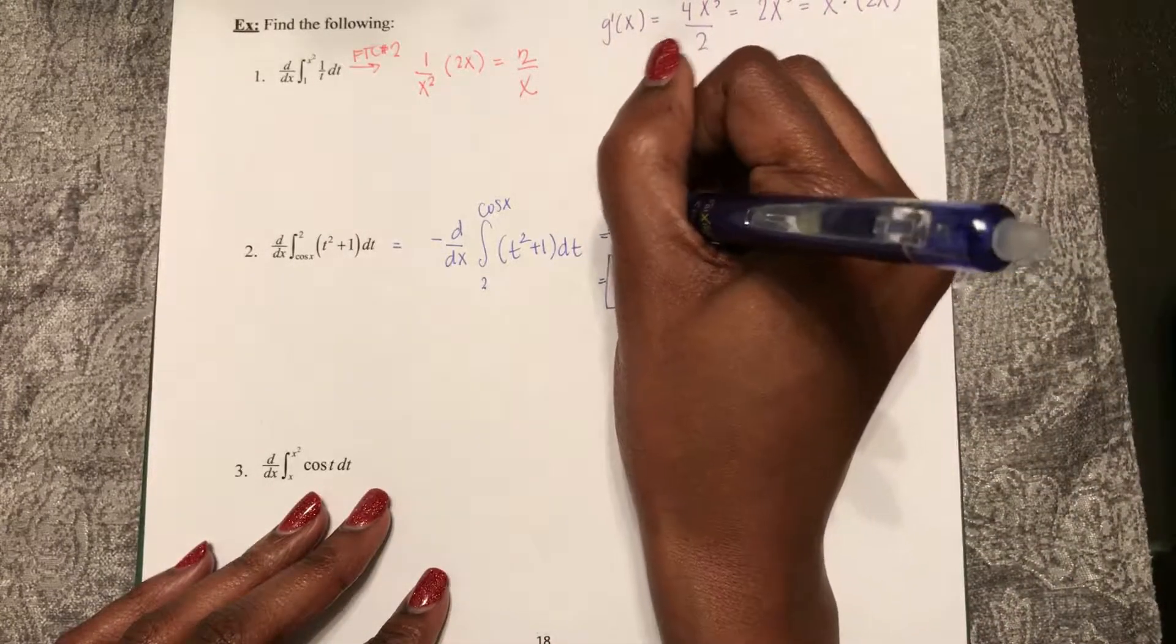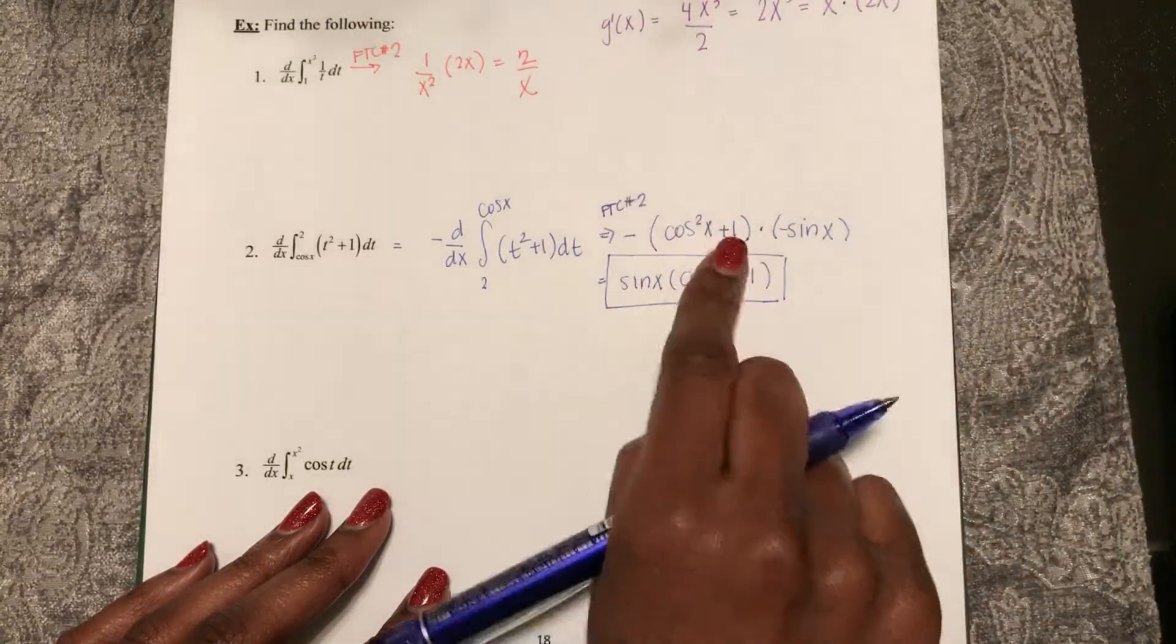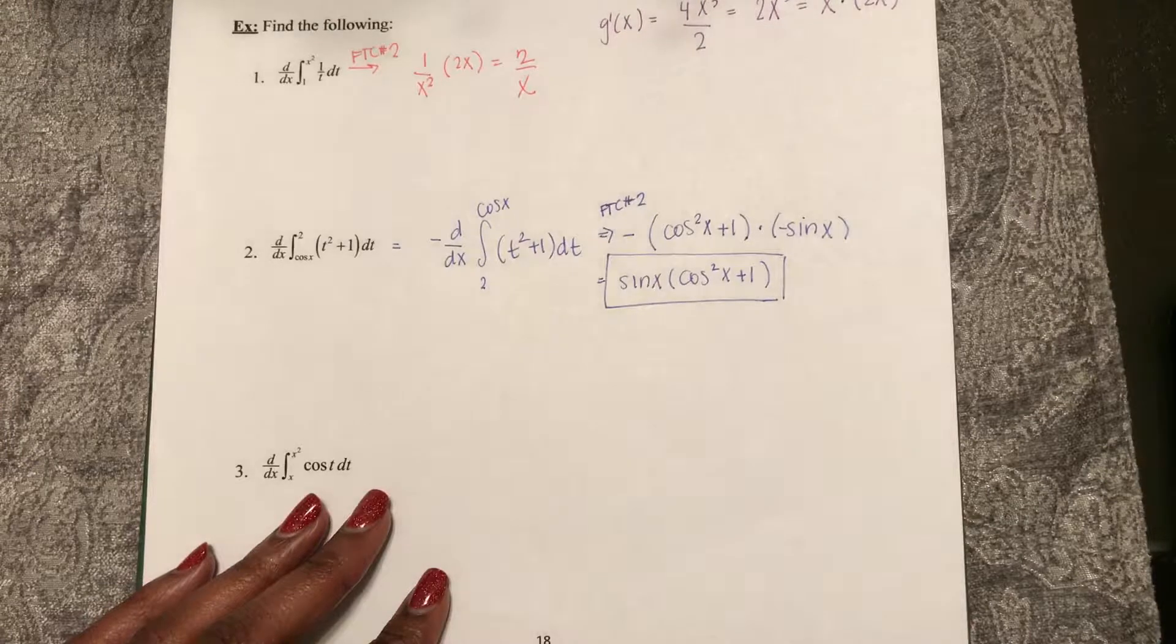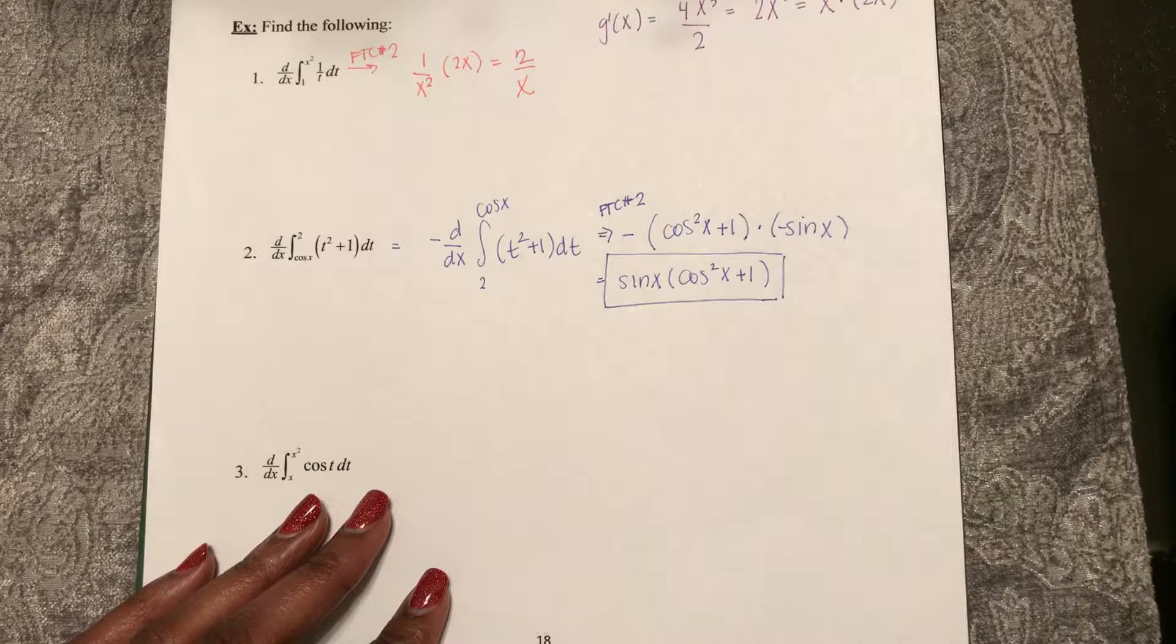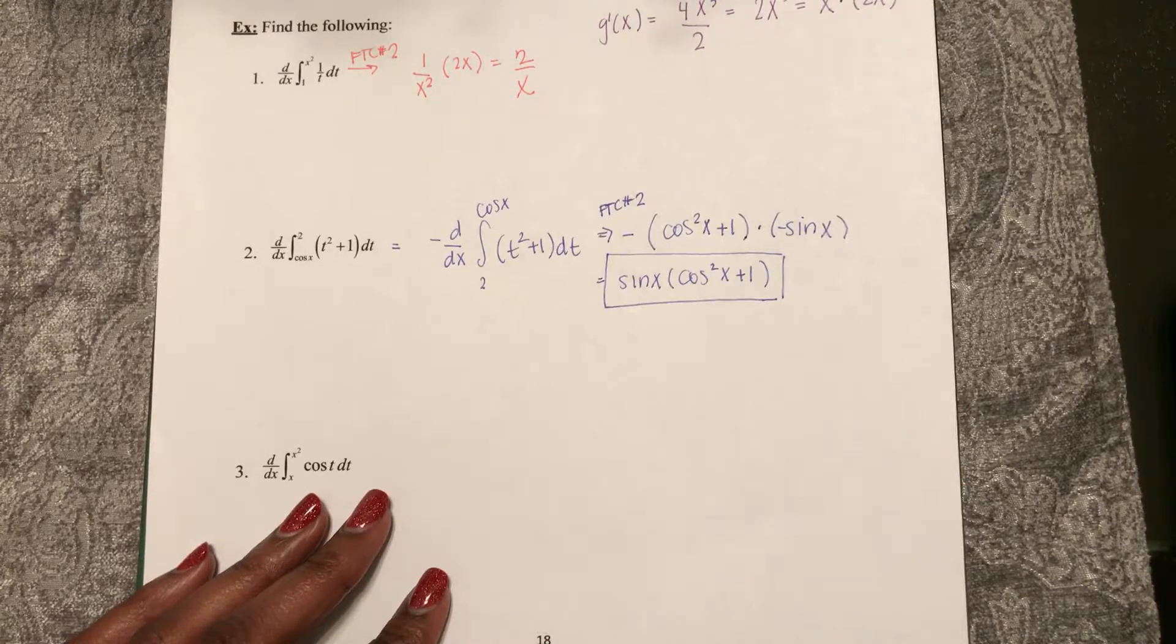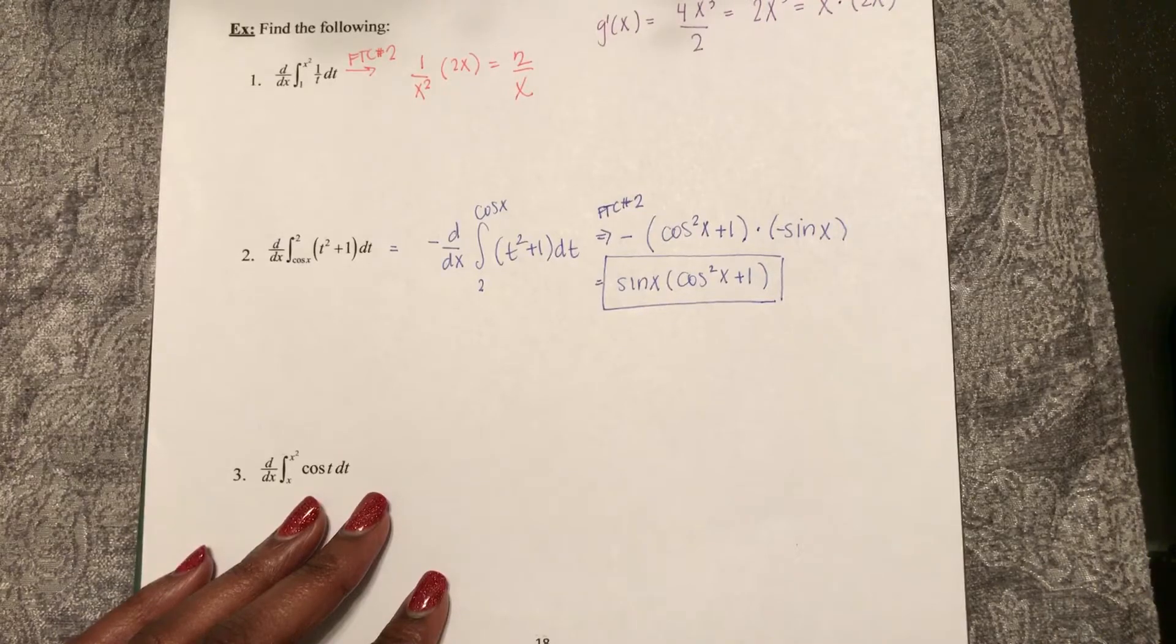So I should have said FTC number 2. Now, mind you, on the AP exam, it might be nice to say that you're using the FTC number 2, but I think it's more important that you can apply it. All right, let's try another one together in the next video.